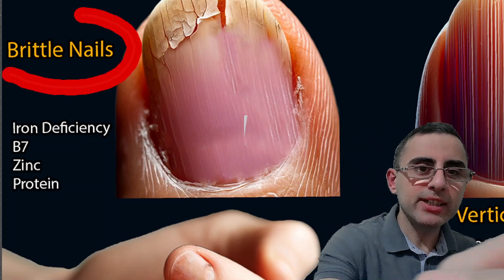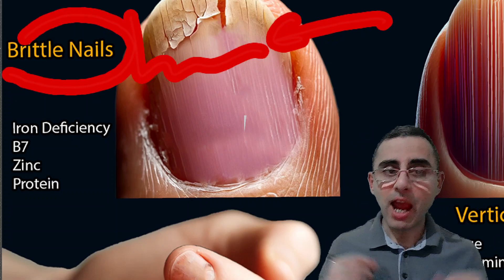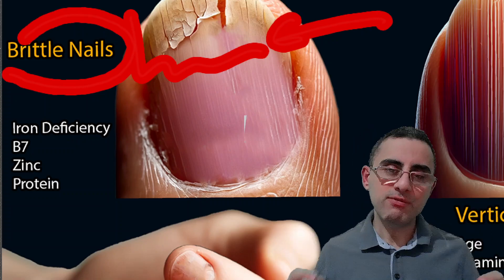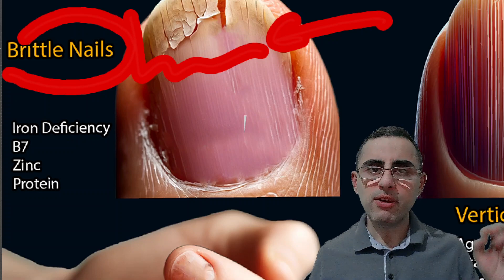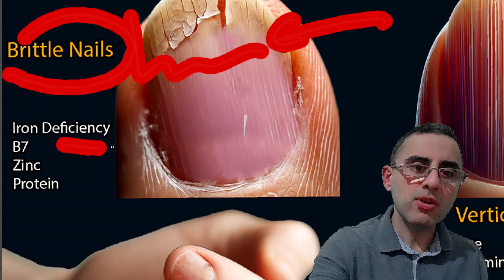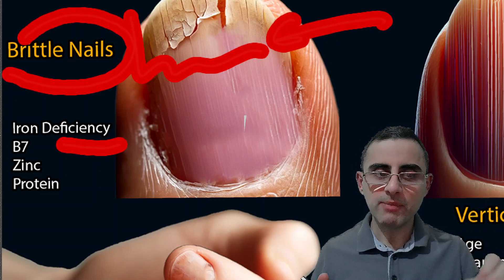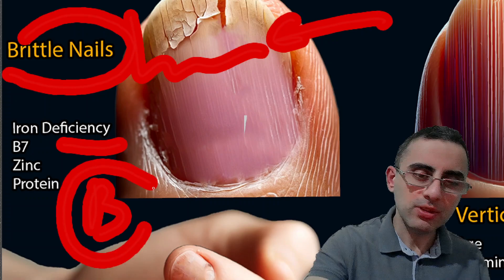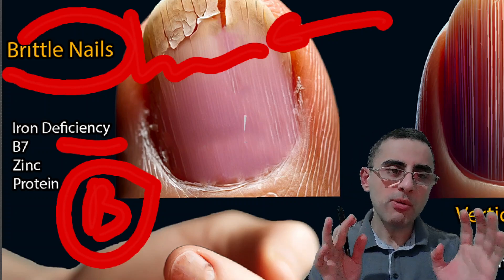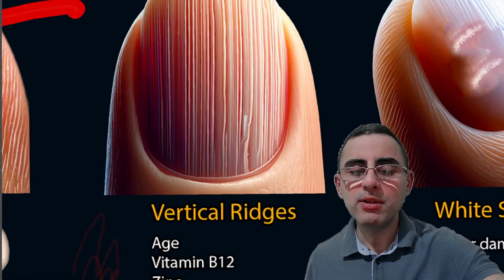First is brittle and cracking nails — a very common condition, especially among women. It is usually caused by iron deficiency anemia, because women lose iron through menstruation. Iron deficiency is the most common cause of brittle nails. The second most common cause is zinc deficiency and protein deficiency. Sometimes B7 or biotin deficiency is a factor, but many foods contain biotin, so biotin deficiency is not common.